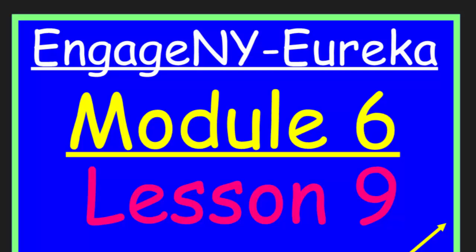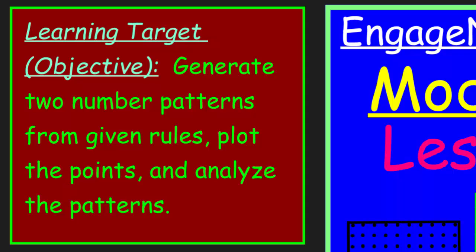We just completed Lesson 8, so we're going to continue on our thought process. Our learning target says: generate two number patterns from given rules, plot the points, and analyze the patterns. It seems like a lot more than what we were doing before, but we're just going to create a couple of number patterns from rules we've already done, plot points, and analyze.